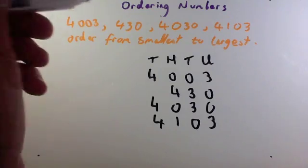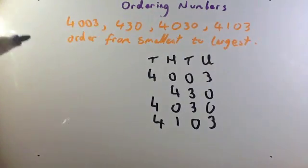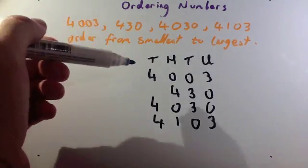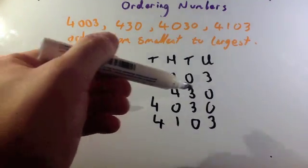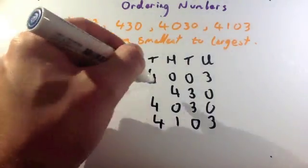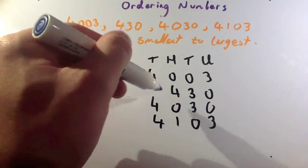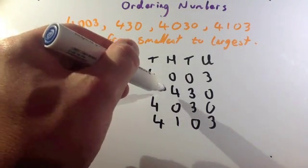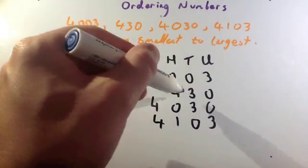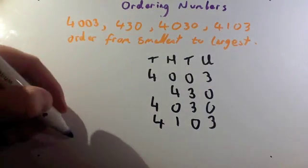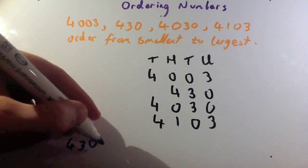Now, I want to arrange them from smallest to largest. So, let's first of all look for the smallest number. First of all, I notice that this number has no numbers in the thousands, and it's the only one with no numbers in the thousands. So, therefore, 430 must be the smallest.